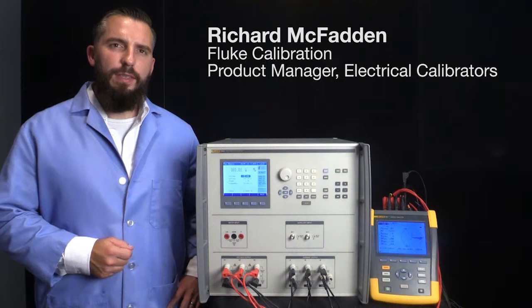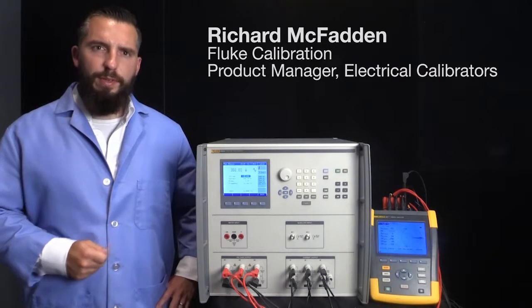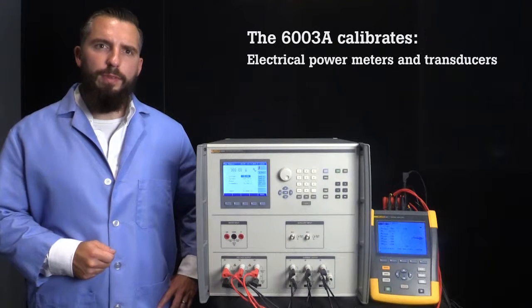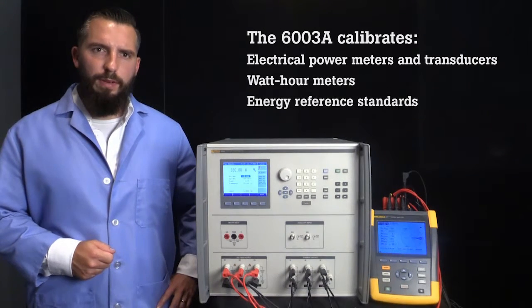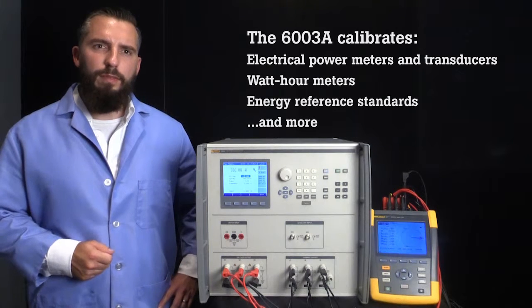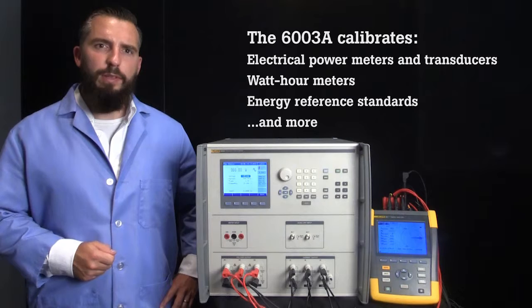The Fluke Calibration 6003A three-phase power calibrator is a precise instrument for calibrating electrical power meters and transducers, watt-hour meters, energy reference standards, and other measuring devices used to determine the magnitude and power quality of electricity supplied to consumers.